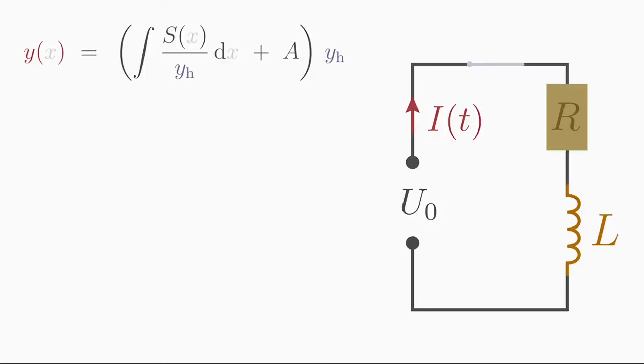The current does not have its maximum value immediately, but increases slowly due to Lenz's law. Using Kirchhoff's laws, we can set up the following differential equation for the current I.